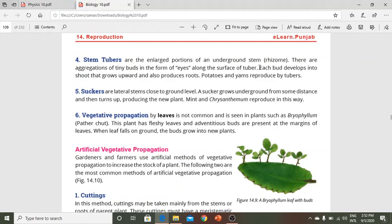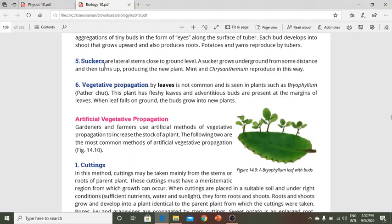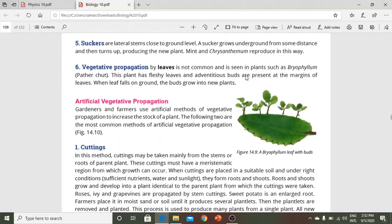Suckers are lateral stems close to ground level that grow underground, then emerge and produce a new plant. Mint and Chrysanthemum reproduce this way.